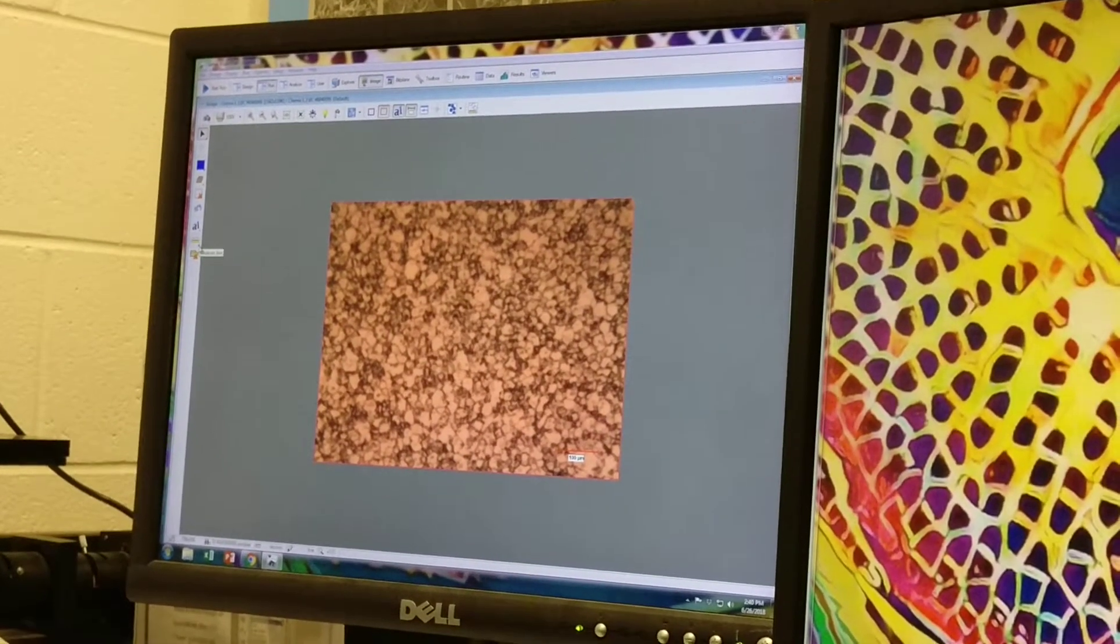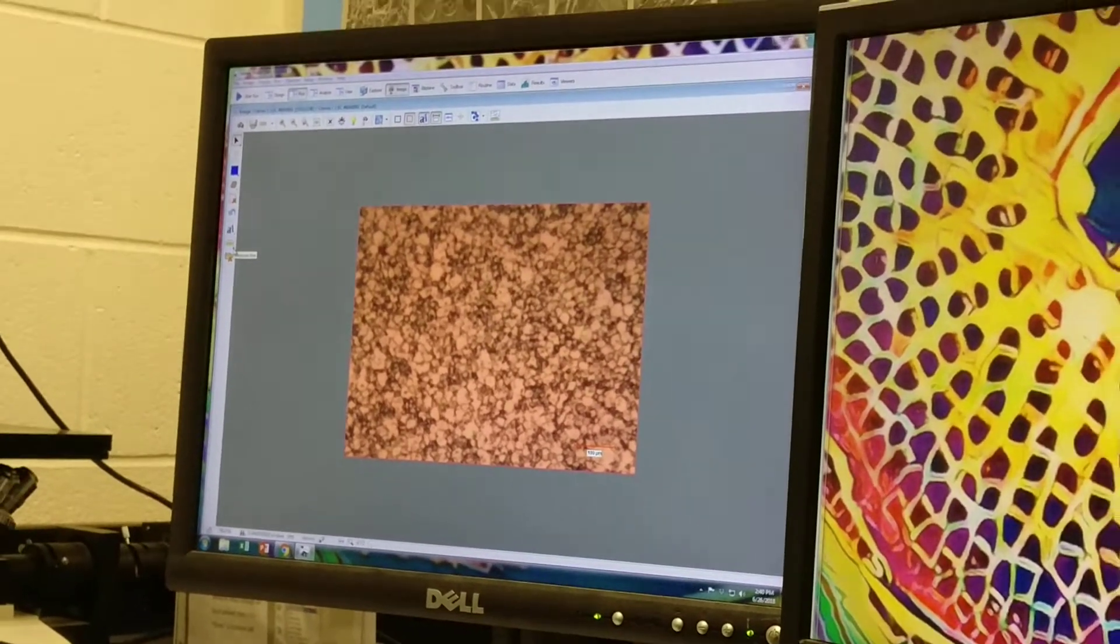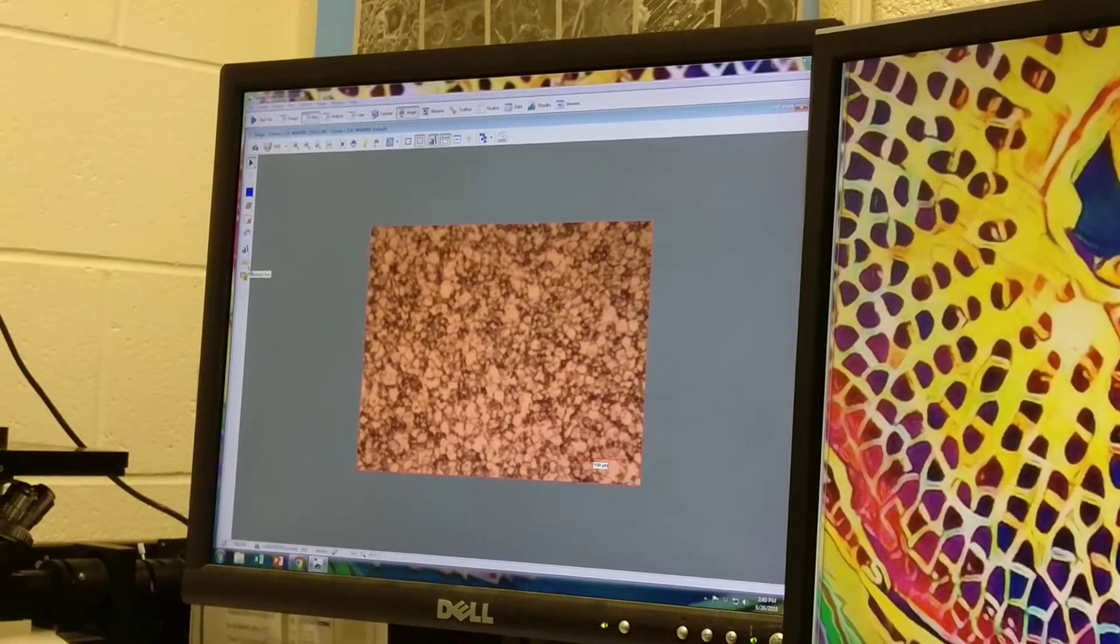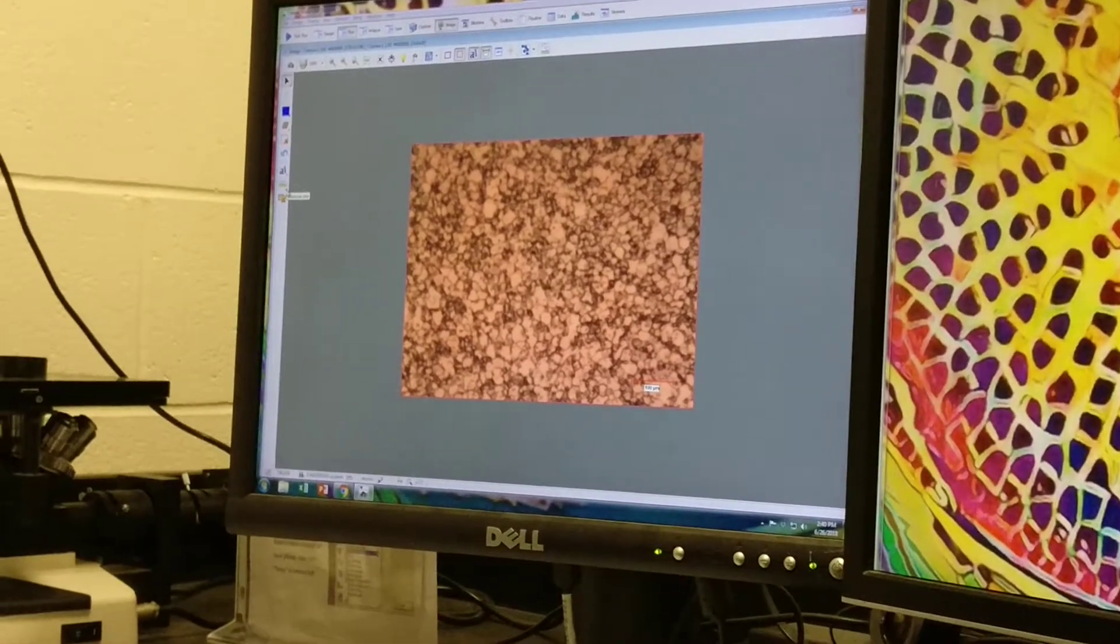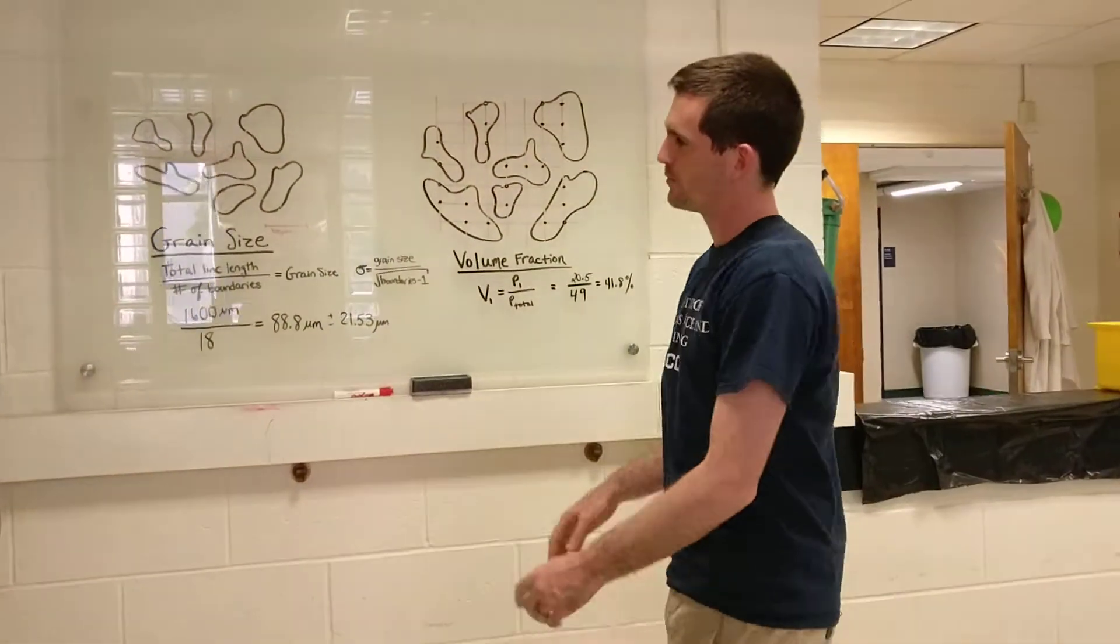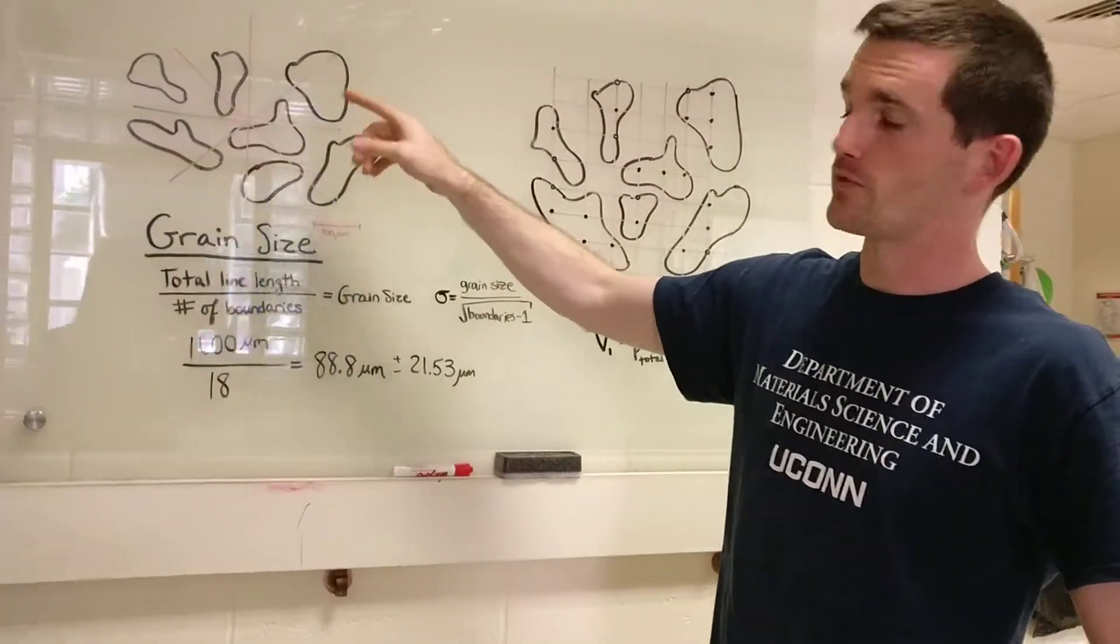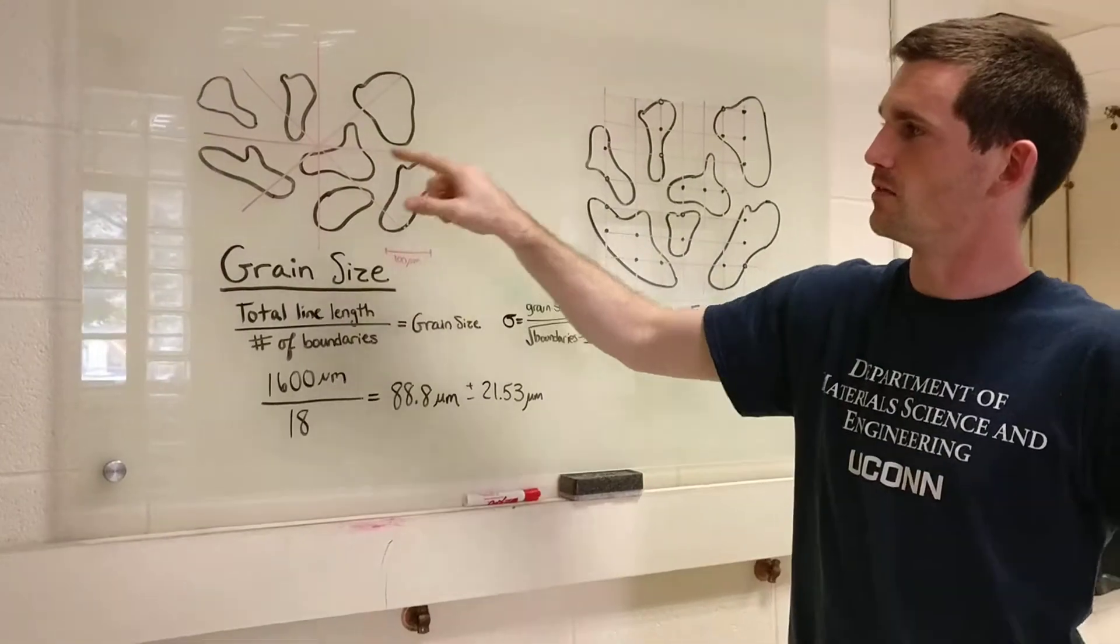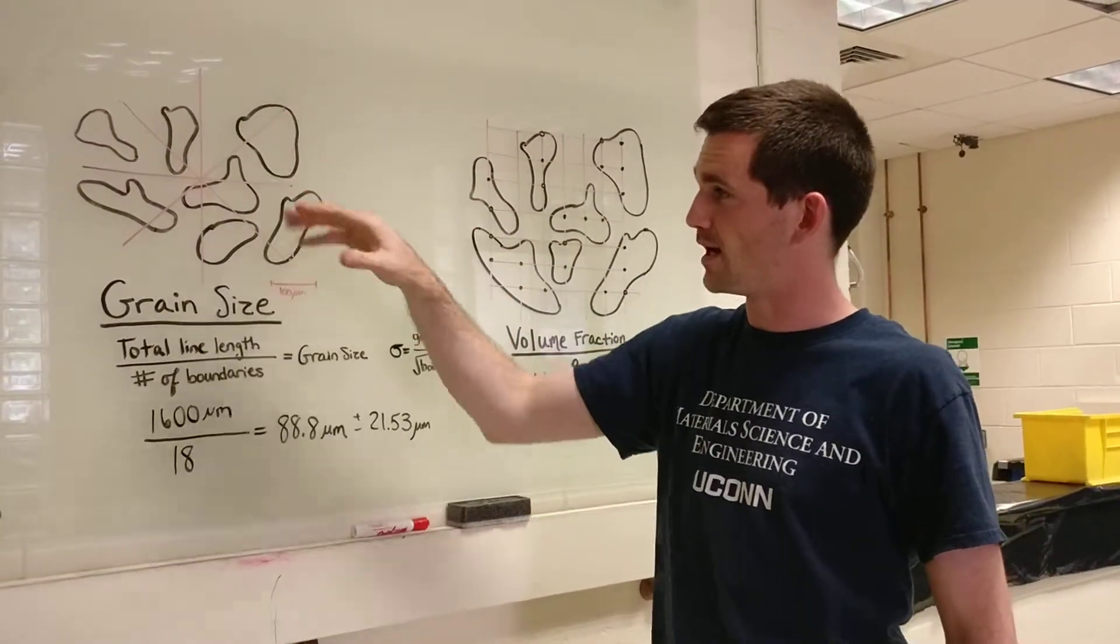With a microstructure like this where you have multiple phases, I'm going to show you two basic fundamental quantitative metallography concepts, and those are on this whiteboard over here. Those are grain size and volume fraction. We have a lot of grains. Maybe this is just a two-phase material. For grain size we're going to draw these lines of measurement in an asterisk style pattern, maybe four lines.